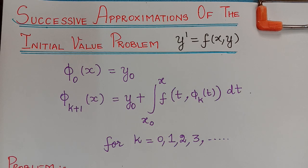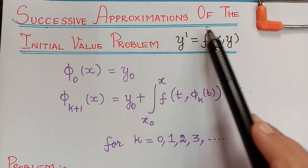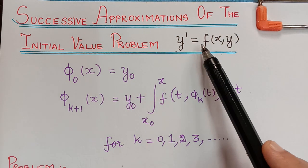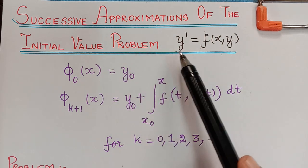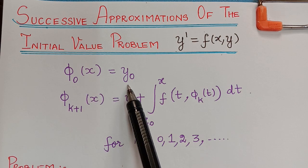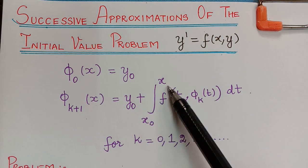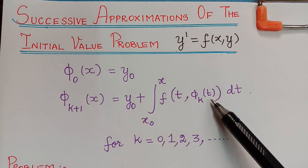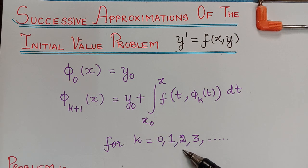Hello students. In this video we shall learn about the successive approximations of the initial value problem y' = f(x, y). The successive approximations are given by φ₀(x) = y₀, and φₖ₊₁(x) = y₀ + integral from x₀ to x of f(t, φₖ(t)) dt, for k = 0, 1, 2, 3, ...